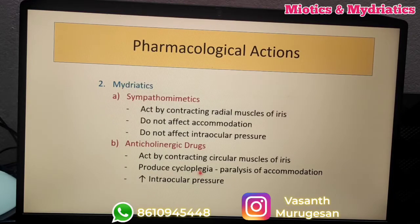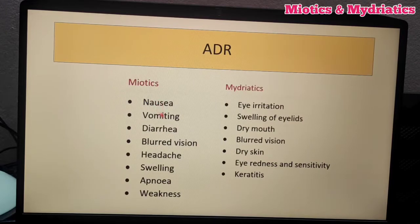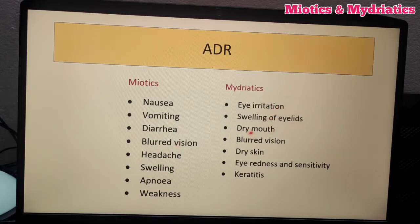Cycloplegia is one form of side effect. Other side effects include nausea, vomiting, diarrhea, blurred vision, accommodation spasm, eye irritation, swelling of eyelids, dry mouth, and blurred vision. Dry mouth occurs because secretion is reduced.